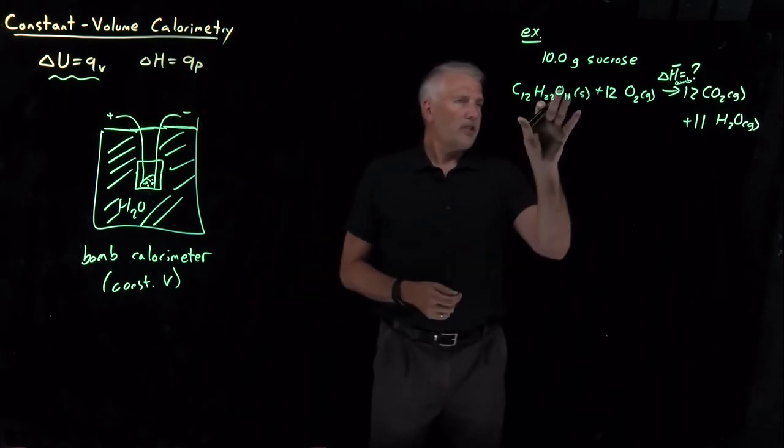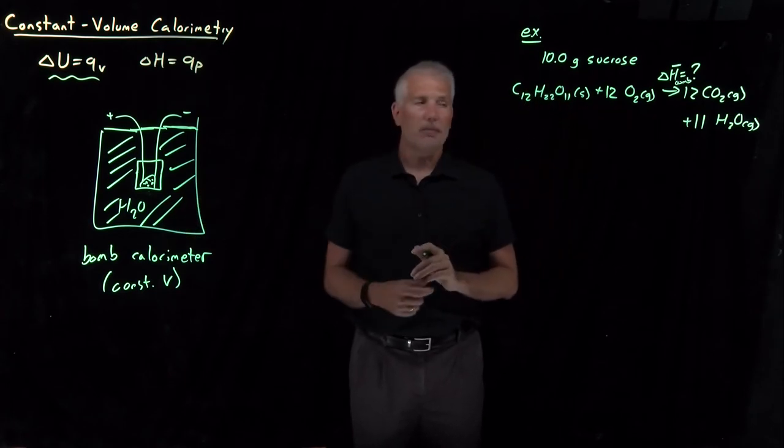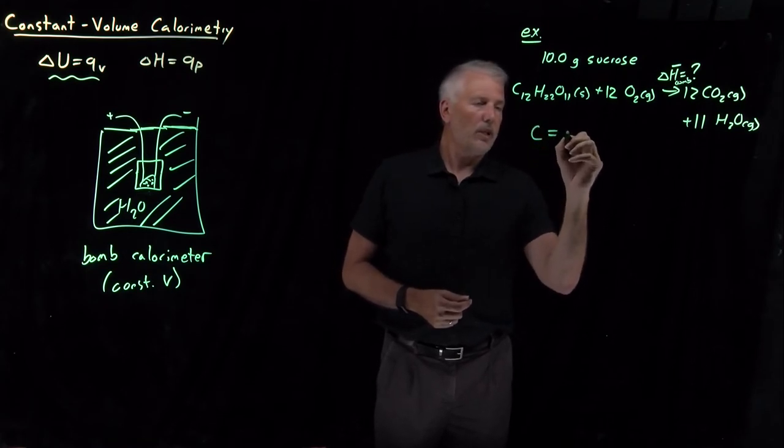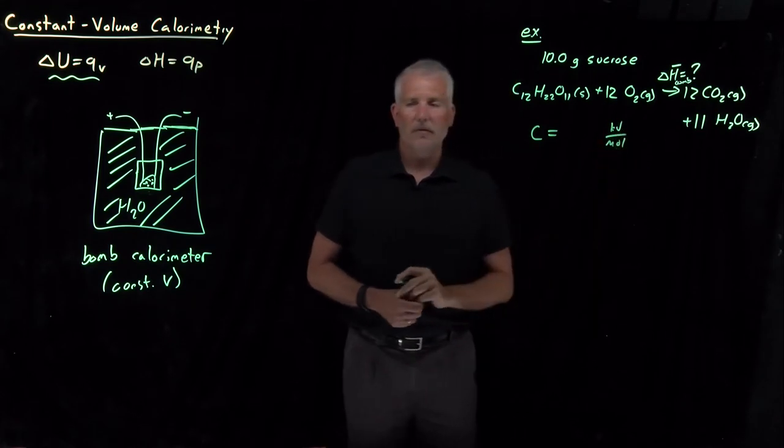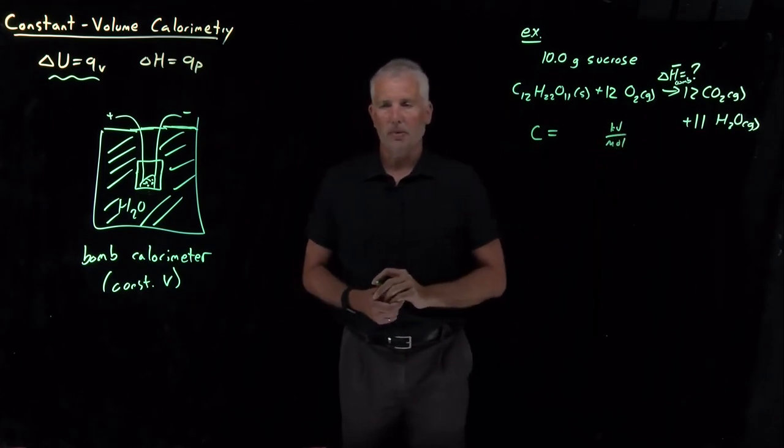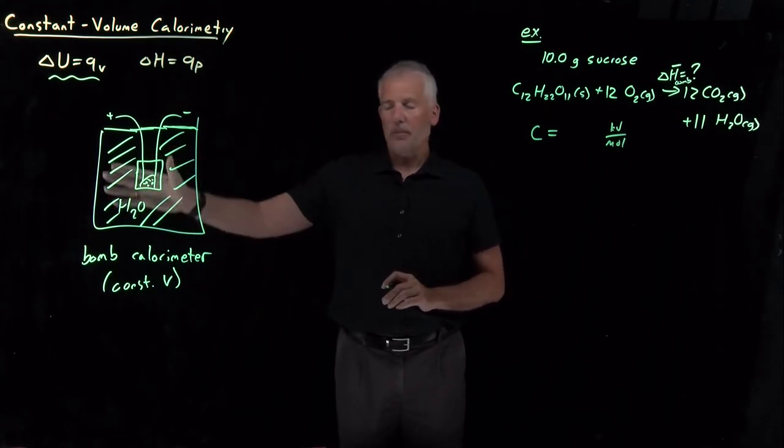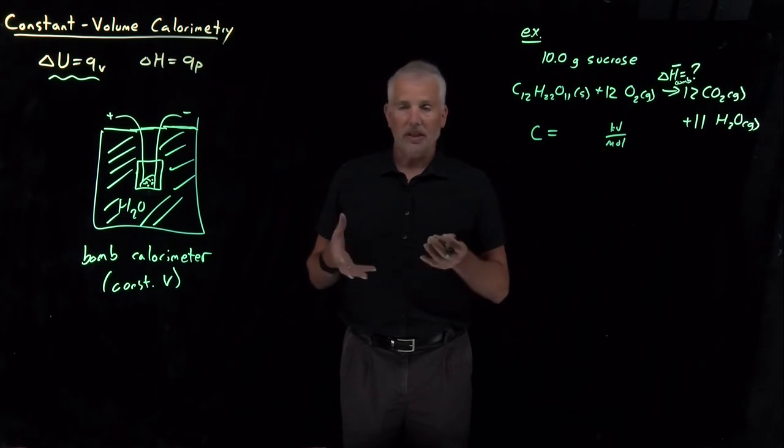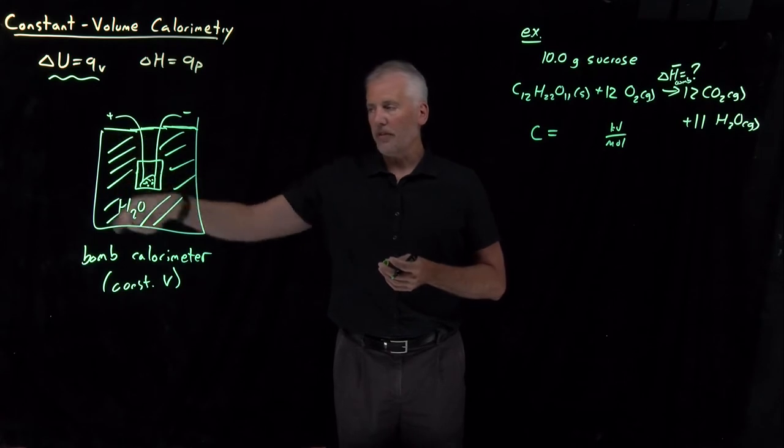When I'm doing this process at constant volume, then it turns out we'll be needing to use this expression. Let me go ahead and finish setting up this example. If I take 10 grams of sucrose and combust it in a bomb calorimeter, from previous experiments we need to have measured the heat capacity of the calorimeter itself. In our previous example where we did constant pressure calorimetry, all I gave you is the heat capacity of the water. In this case, I've got a metal container, I've got wires, I've got the water, I've got the outer casing.